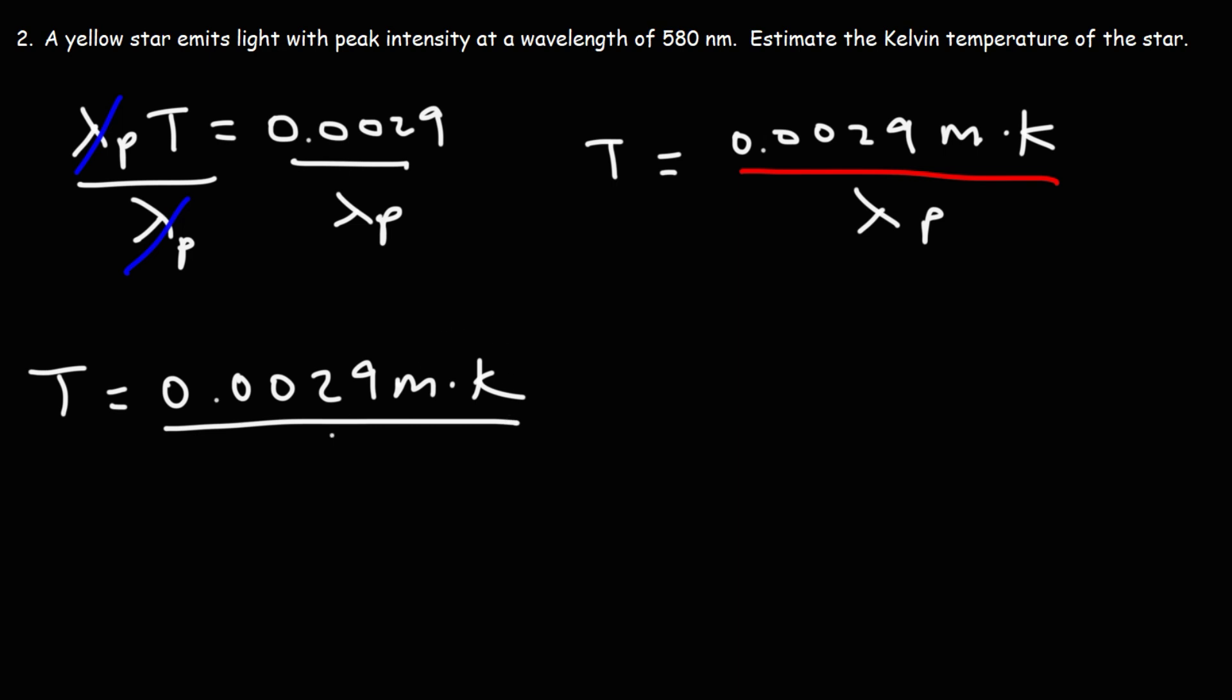The wavelength is 580 nanometers, which is 580 times 10 to the negative 9 meters. We can cancel out the unit meters and we'll get the unit Kelvin for temperature. It's 0.0029 divided by 580 times 10 to the minus 9, and this is going to be 5000 Kelvin.